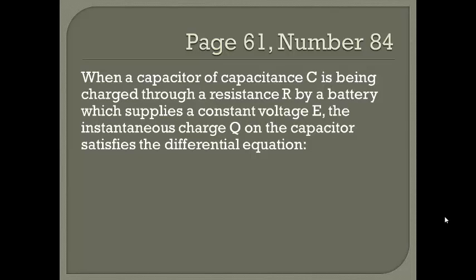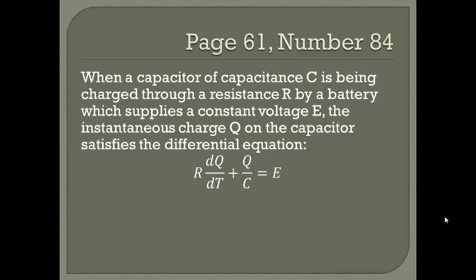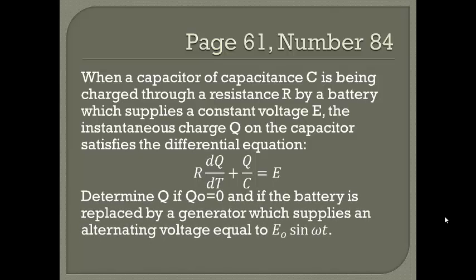When a capacitor of capacitance C is being charged through a resistance R by a battery which supplies a constant voltage E, the instantaneous charge Q on the capacitor satisfies the differential equation R dQ/dt + Q/C = E. Determine Q if the initial charge is equal to 0, and if the battery is replaced by a generator which supplies an alternating voltage equal to E₀ sine(ωt).